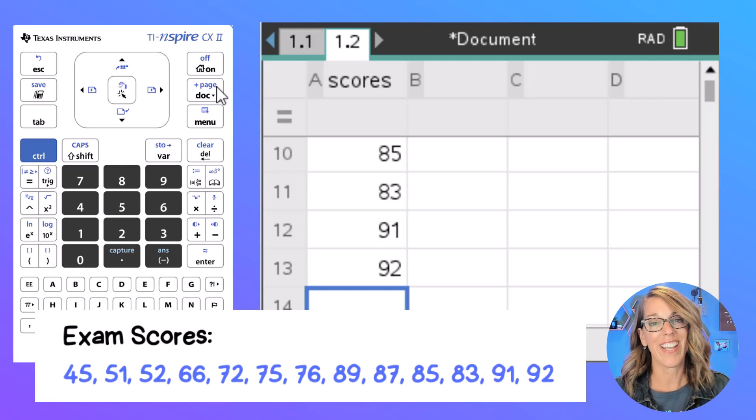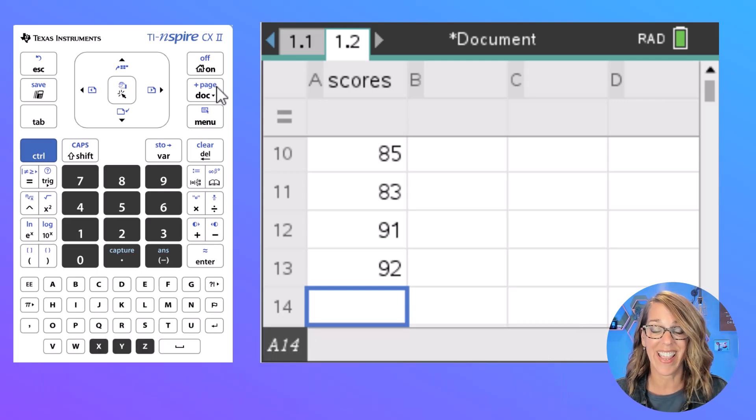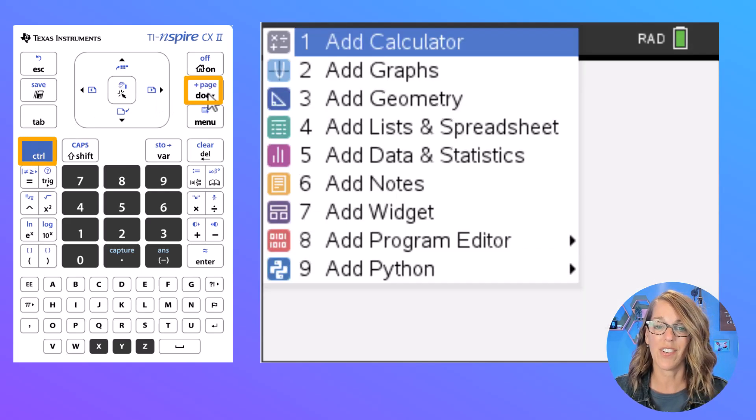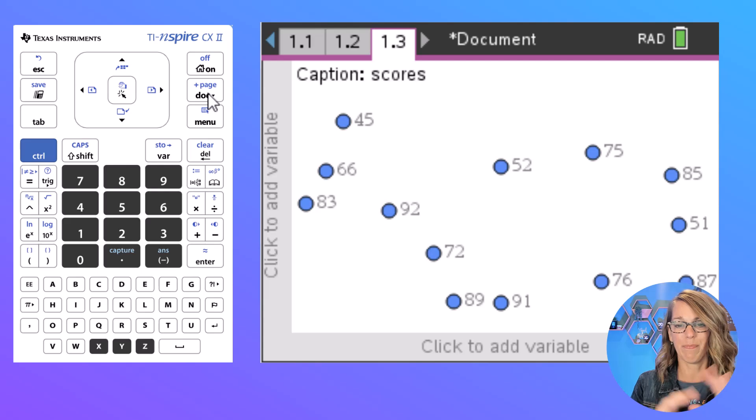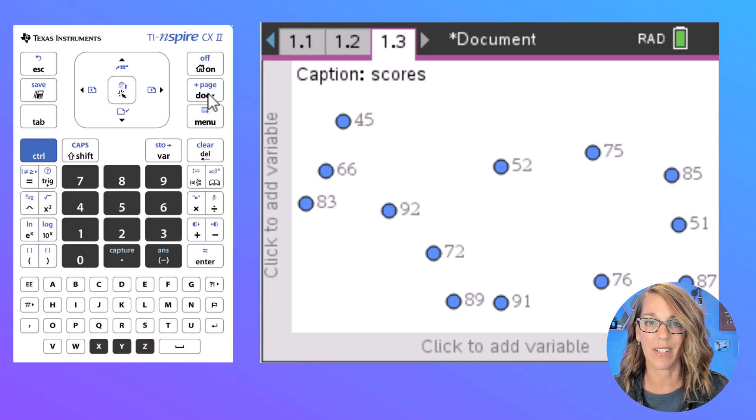Okay, so I've got all of my data in there. I want to add an additional page, and that additional page is going to be data and statistics. So let's do control add page, and then data and statistics is number 5, so I'm going to go ahead and hit number 5 and it just plots my numbers here with nothing really in particular.